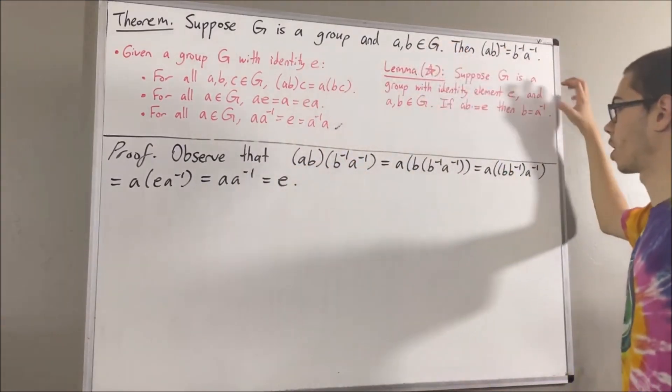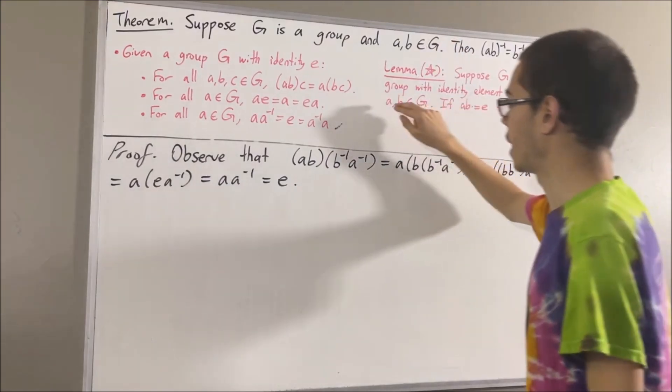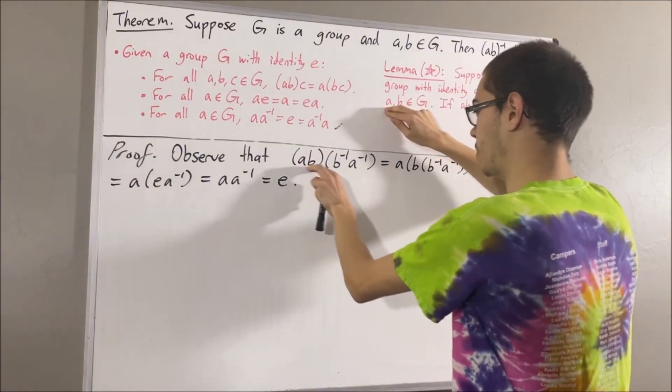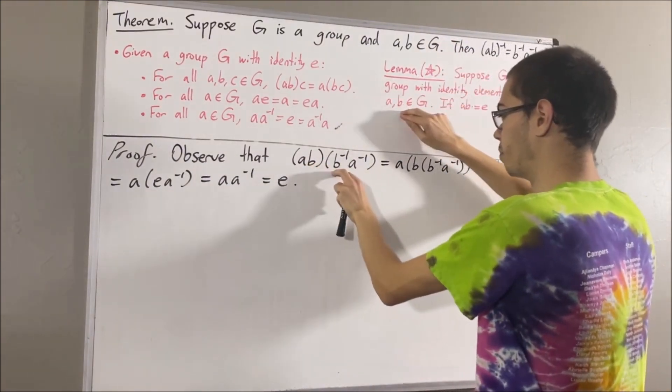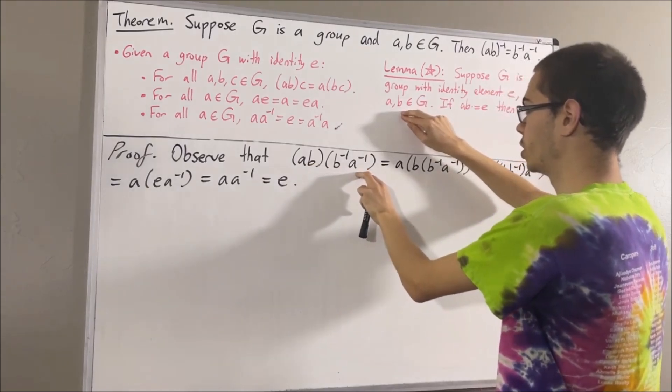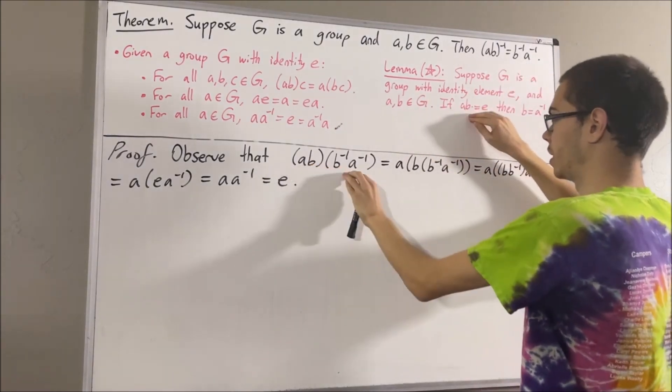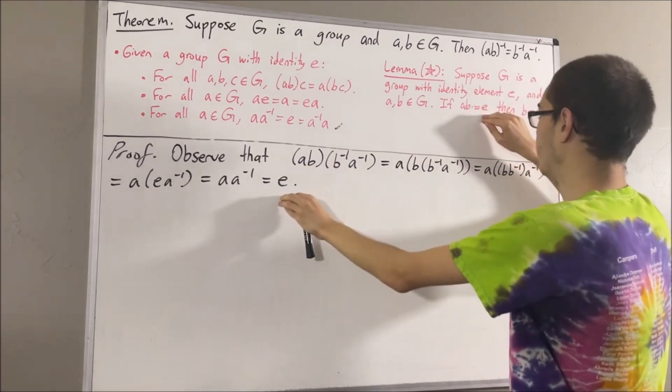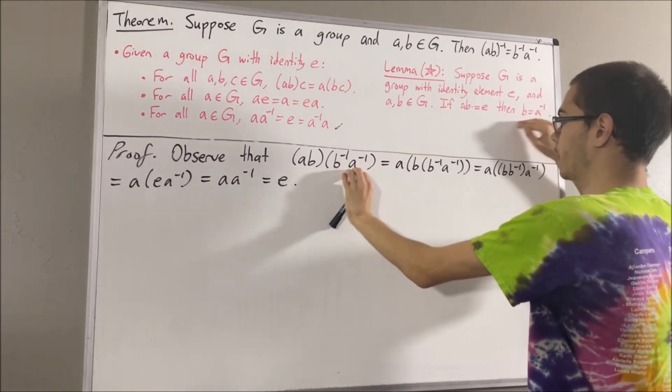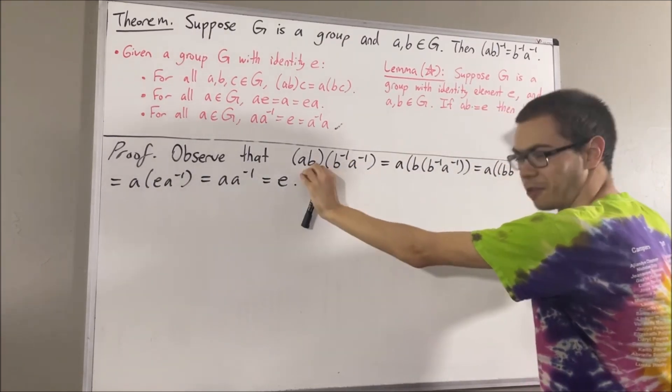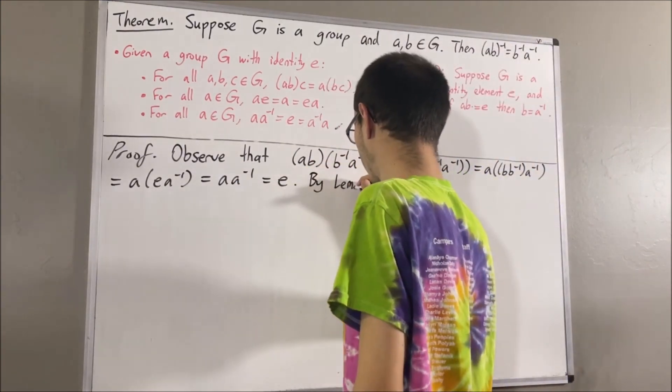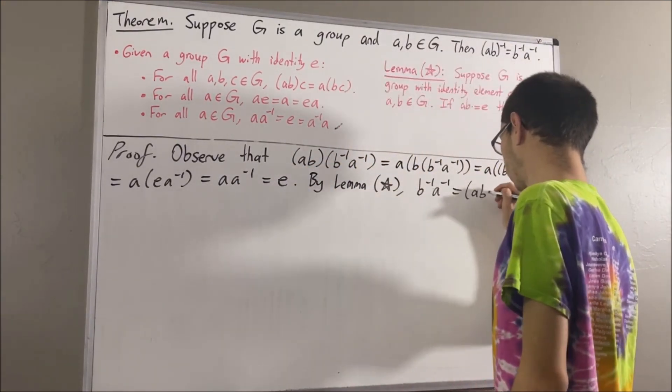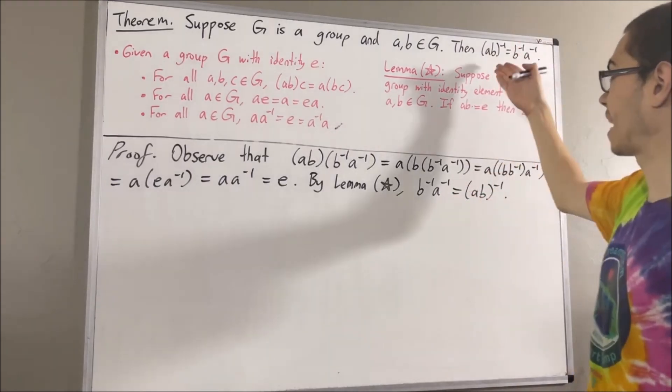Now, let's apply lemma star. If we take A to be AB and B to be B inverse A inverse, well, we do see that A times B is equal to E. Therefore, this guy is equal to the inverse of this guy. And that is exactly what we wanted to prove.